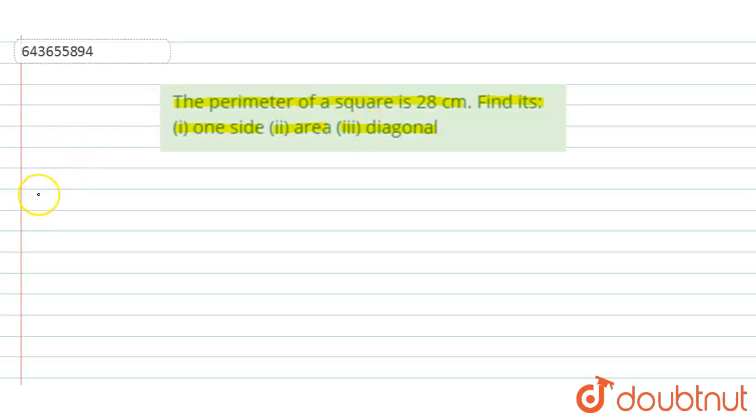So first of all, in the first part we will use the perimeter formula. The perimeter of a square is equal to 4a, where a is the side of the square. So perimeter is given to us which is 28, and equals 4a.